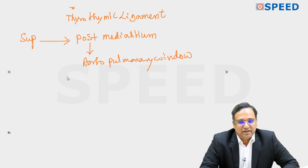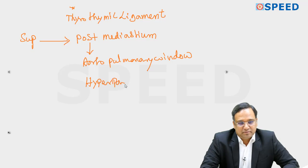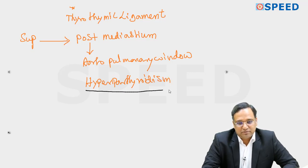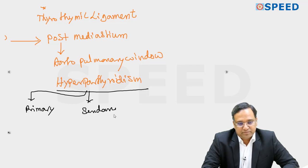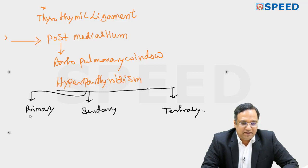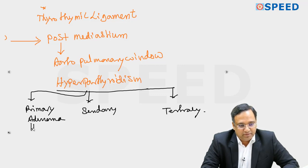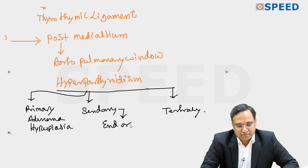Any pathology in the parathyroid gland is basically a result of hyperparathyroidism. Hyperparathyroidism is classified into primary, secondary, and tertiary. The most common cause of primary hyperparathyroidism is parathyroid adenoma followed by hyperplasia. Secondary is due to end-organ resistance, and untreated secondary becomes tertiary.